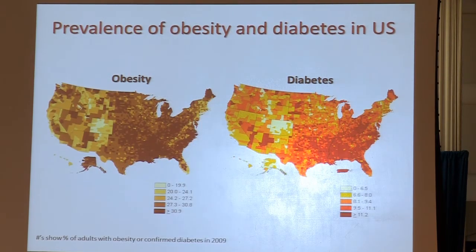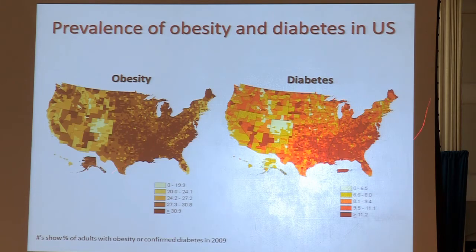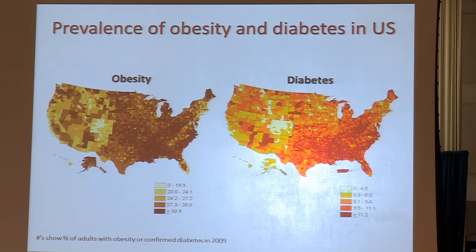We know that we're in an epidemic of diabetes in the United States and other westernized societies. There's a close relationship between obesity and confirmed type 2 diabetes patients. These are 2009 numbers from the CDC. There are regional differences in obesity, with some regions of the country having upwards of 30% of adults considered obese with a BMI greater than 30. That goes hand in hand with upwards of just over 10% having diagnosed diabetes — and that's diagnosed, so undiagnosed is even higher.